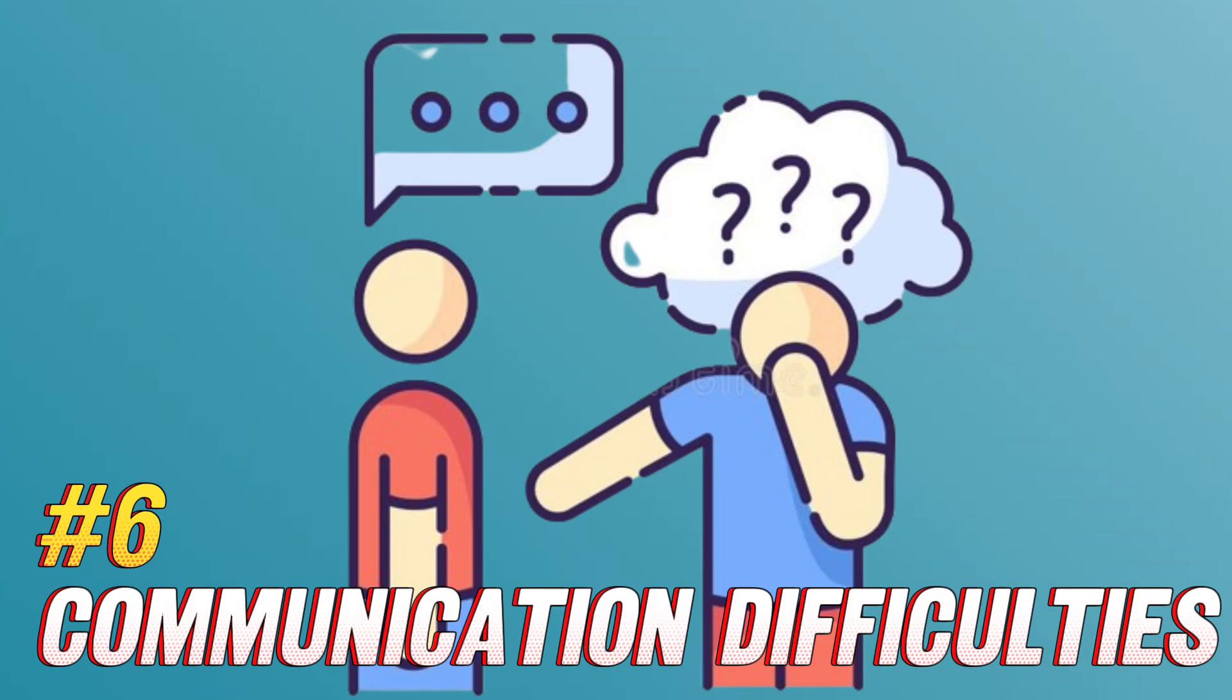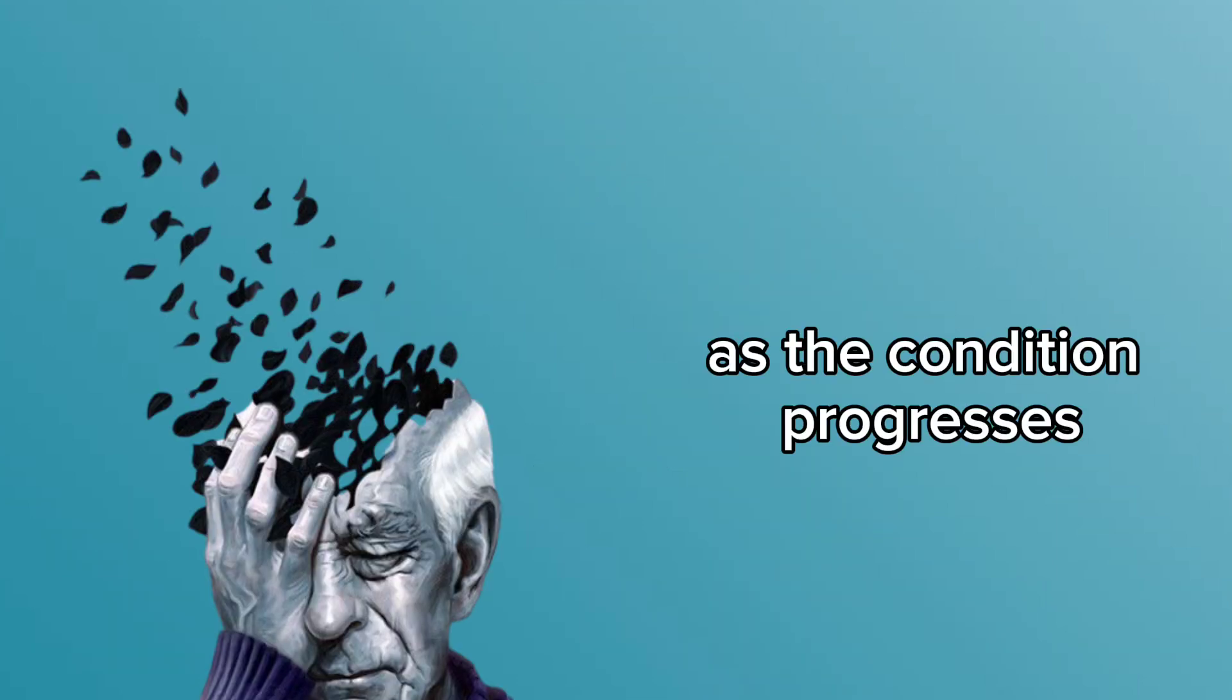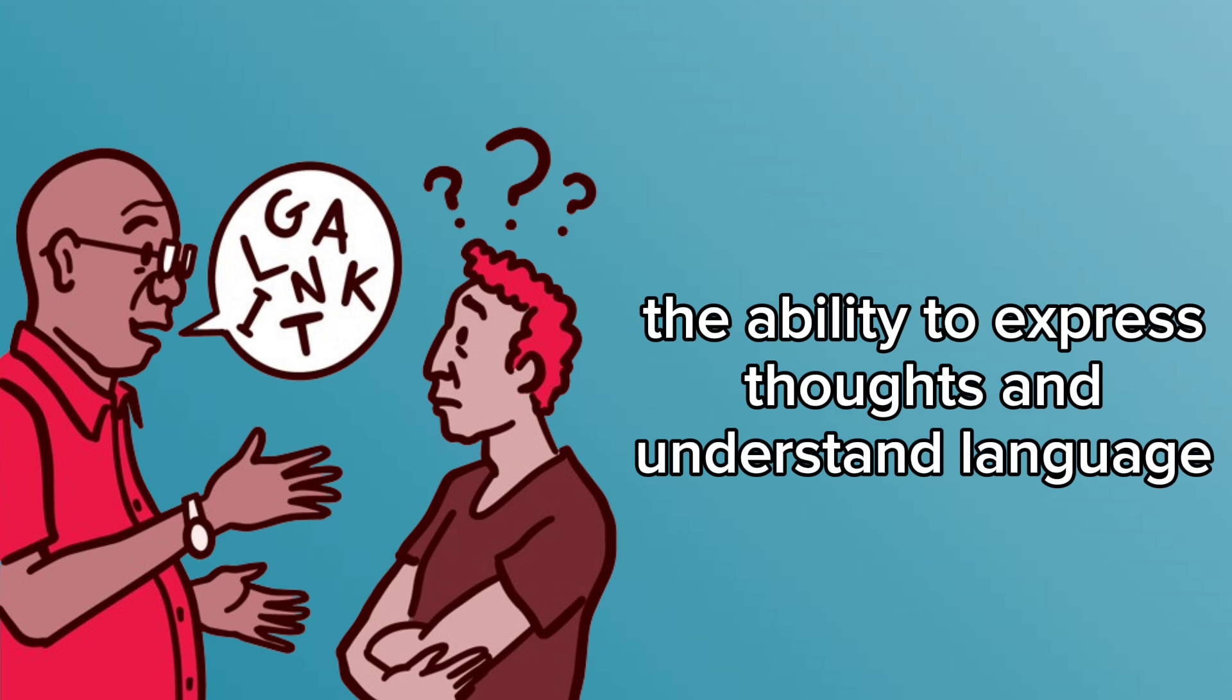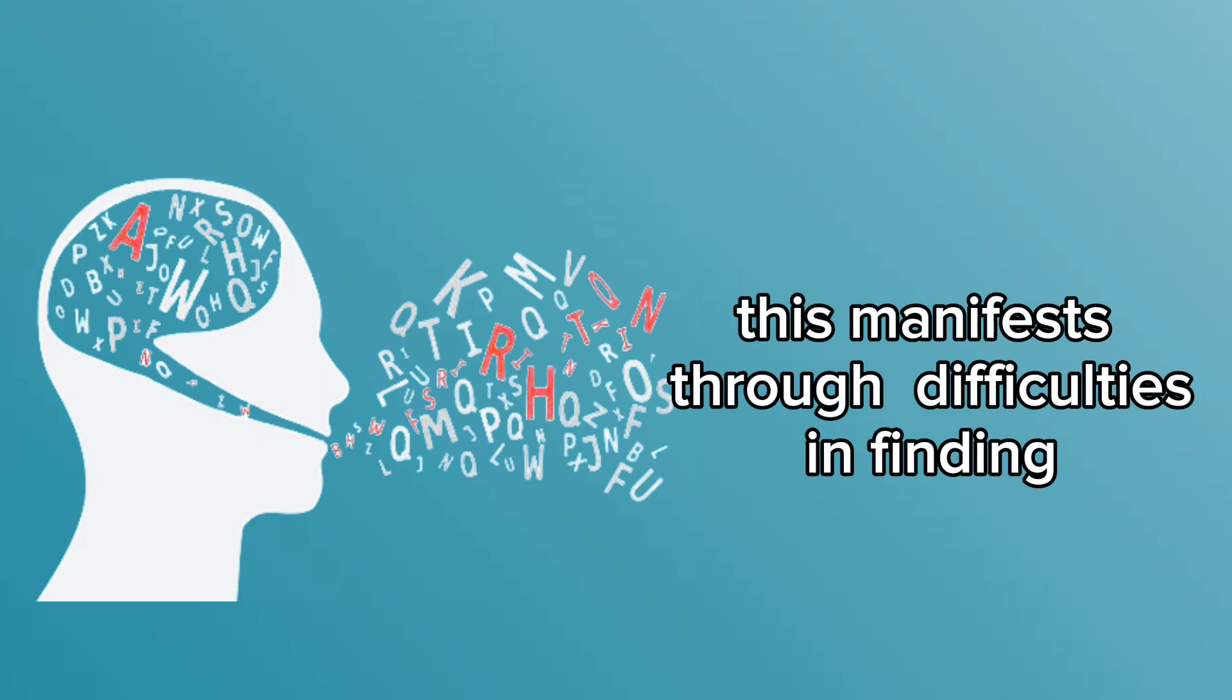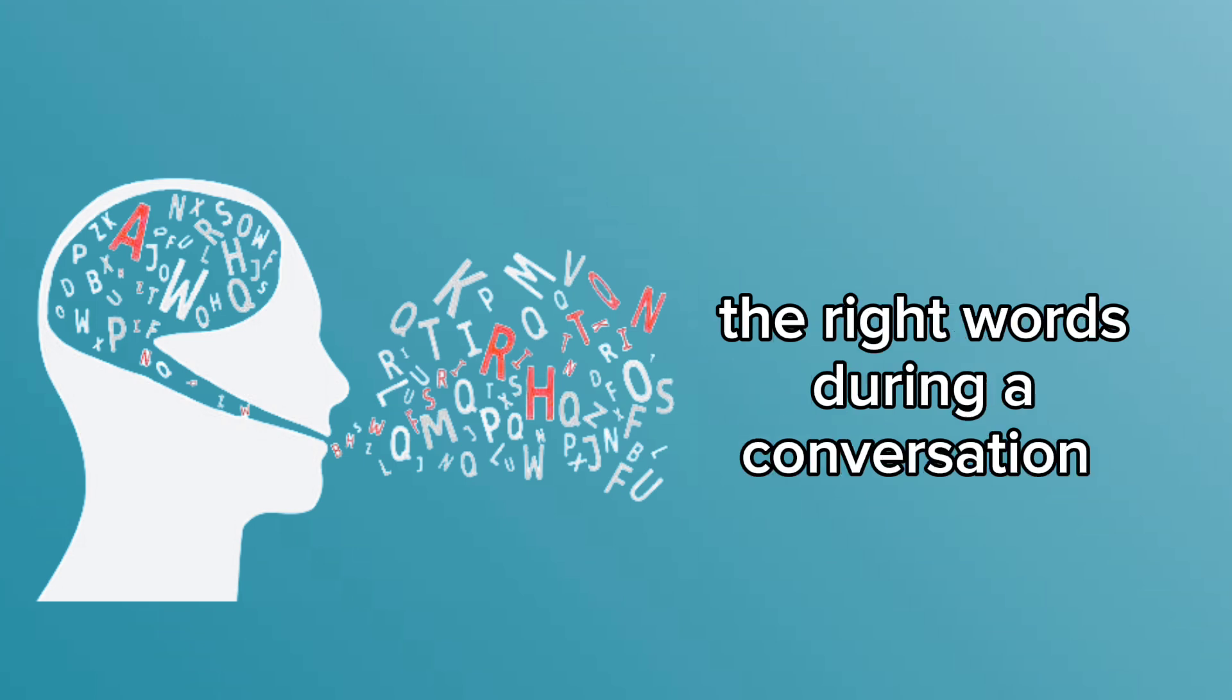Number six: communication difficulties. As the condition progresses, the ability to express thoughts and understand language may gradually decline. This manifests through difficulties in finding the right words during a conversation, expressing oneself clearly, or understanding what others are saying.